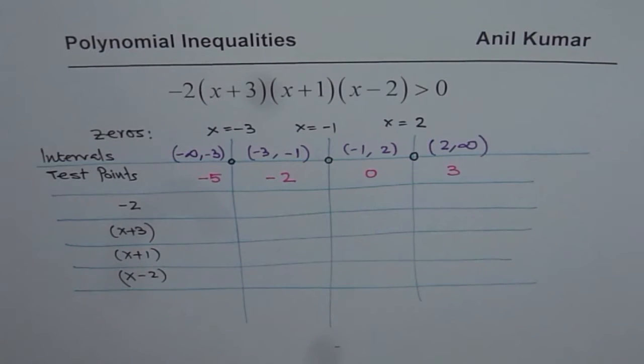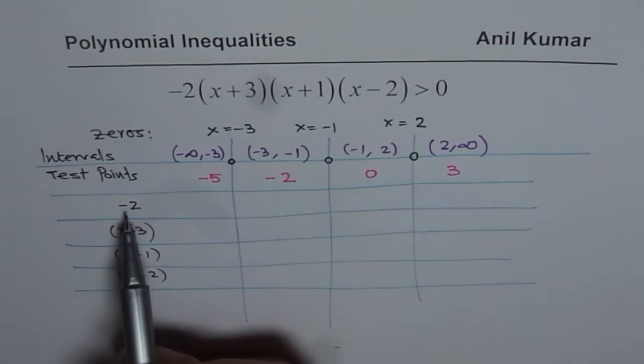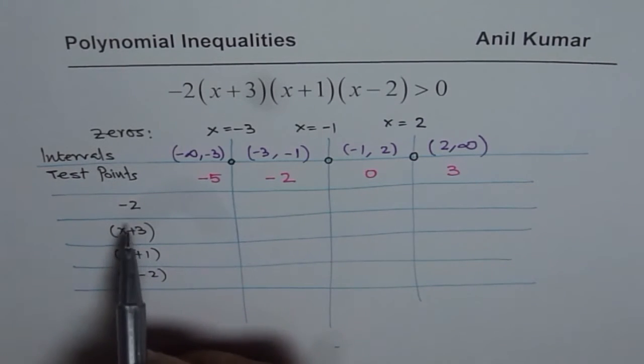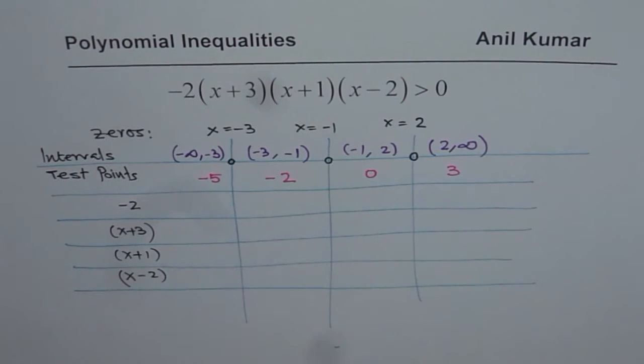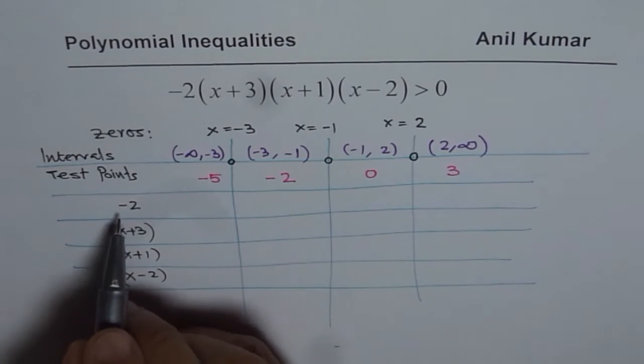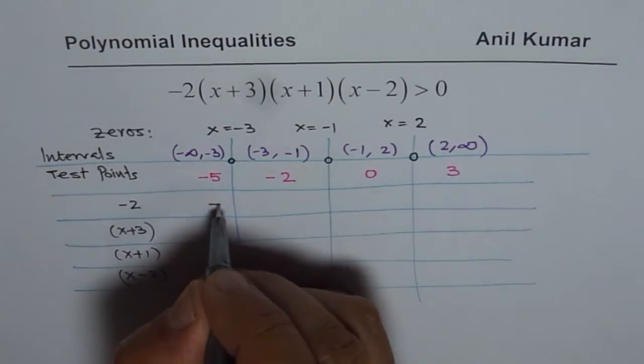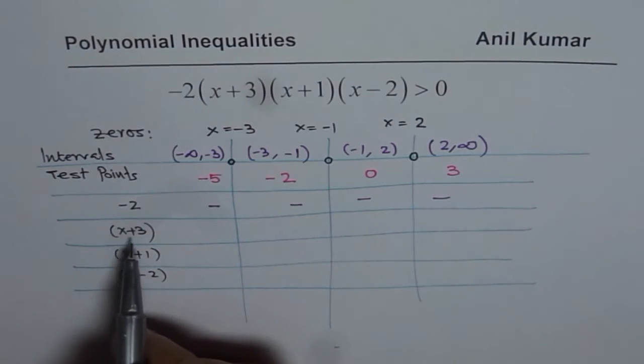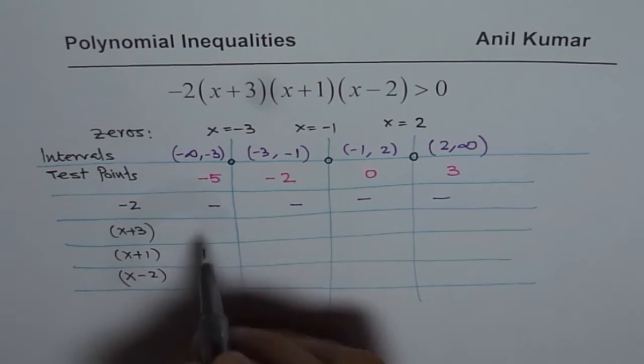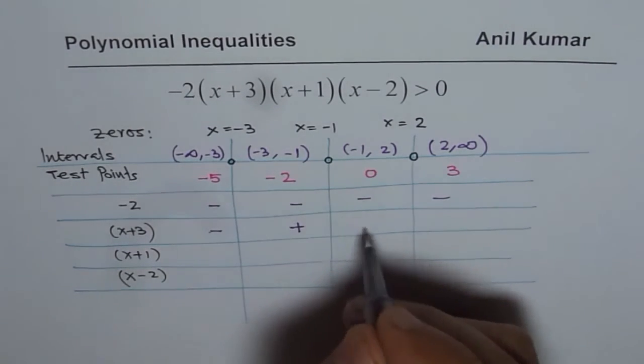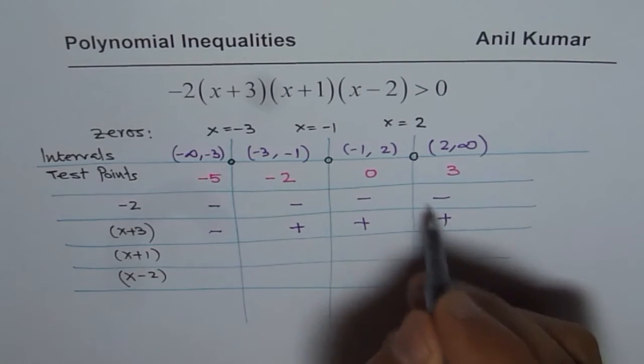Now minus 2, whether x value is minus or positive, it will remain negative 2. While we are testing, we are actually interested only in the sign, not in the value. So the sign for minus 2 will be negative in each interval. Now x plus 3: if I substitute minus 5 here it becomes minus 2, negative sign. If I substitute minus 2 it becomes plus 1, sign is positive. Zero and 3 will also give us positive signs.